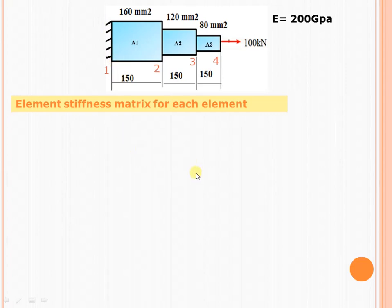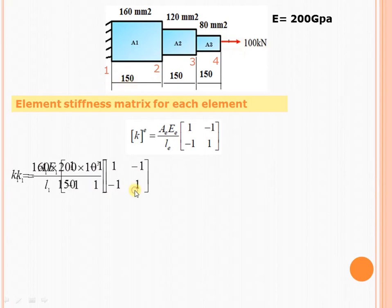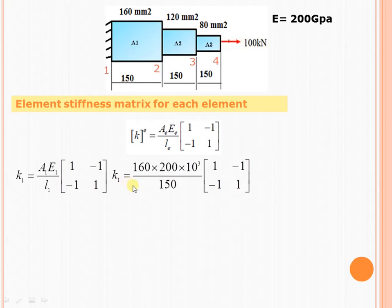To find the elemental stiffness matrix, we have the formula k = AE/L times the matrix [1, -1; -1, 1]. For the first element, k1 = A1*E1/L1 times [1, -1; -1, 1]. The area A1 is 160, E is 200 GPa which we convert to 200×10³ N/mm², and the length of element 1 is 150. Putting these values, we get the elemental stiffness matrix k1. We take 10³ as common since it is common for all three elements.